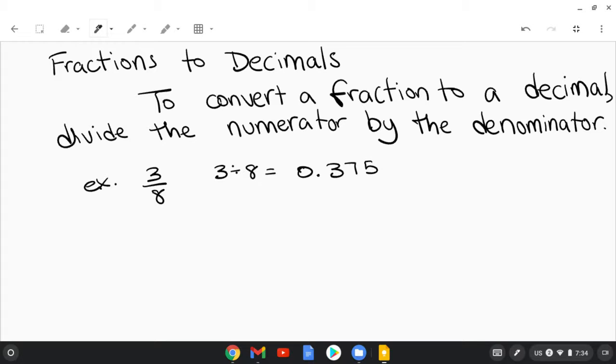And so to turn a fraction 3 eighths into a decimal, I just divide the numerator by the denominator. 4 over 7, I would just go 4 divided by 7.